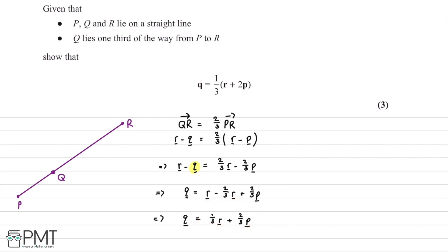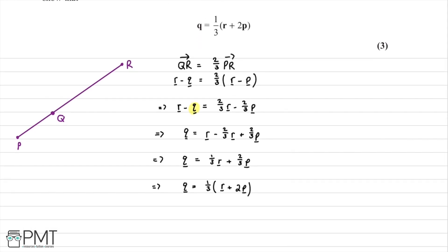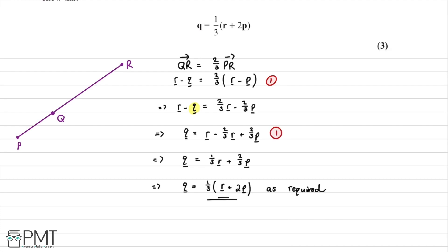We've shown q = (1/3)(r + 2p) as required. The three marks were awarded: one for attempting a relevant vector subtraction, one for expanding brackets and rearranging correctly, and one for concluding with the correct answer q = (1/3)(r + 2p).